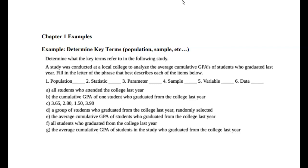Part A says: all students who attended the college last year. Because the study was conducted at the local college and you want to analyze the characteristic of the population — the GPAs in this case — the group you're interested in is the students who graduated last year. So all students who attended the college last year would be your population. This fits with A as the population.